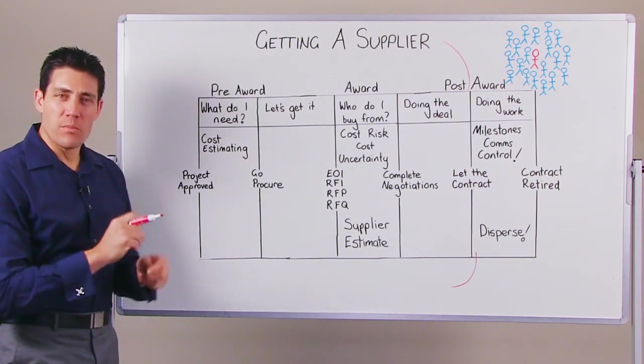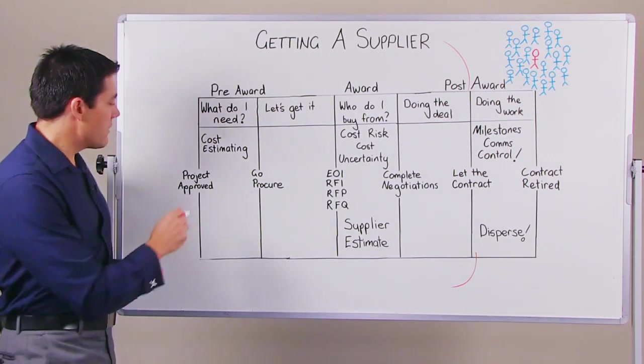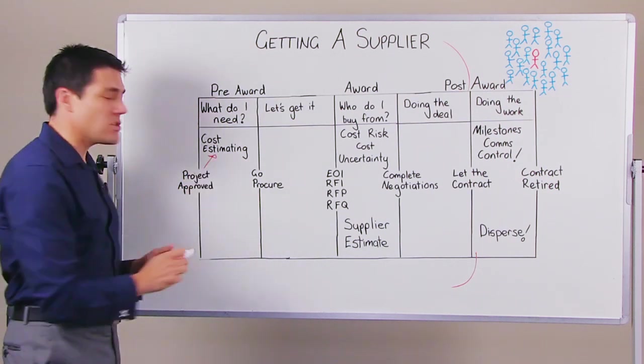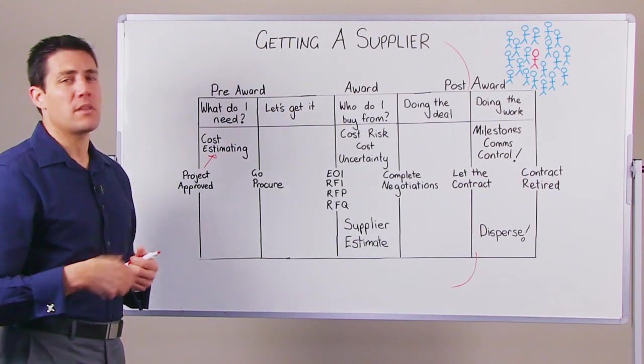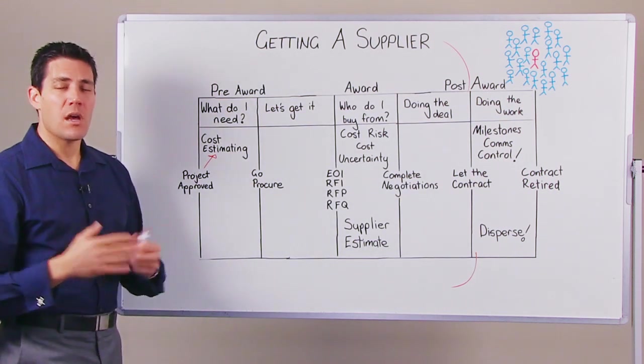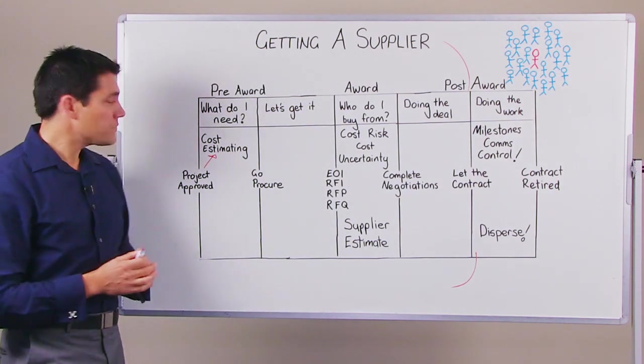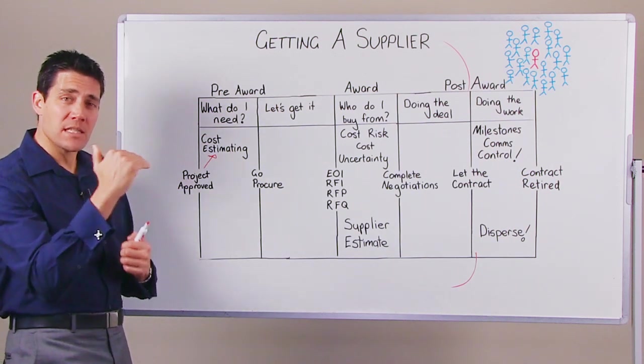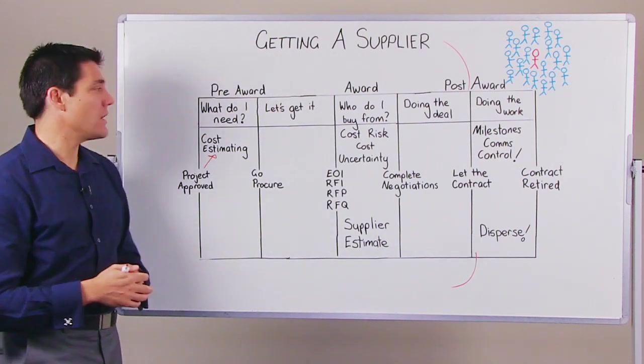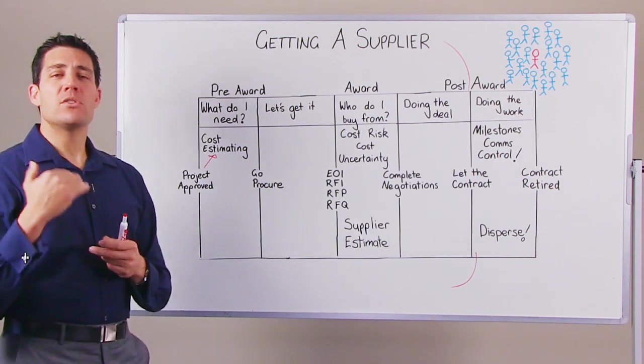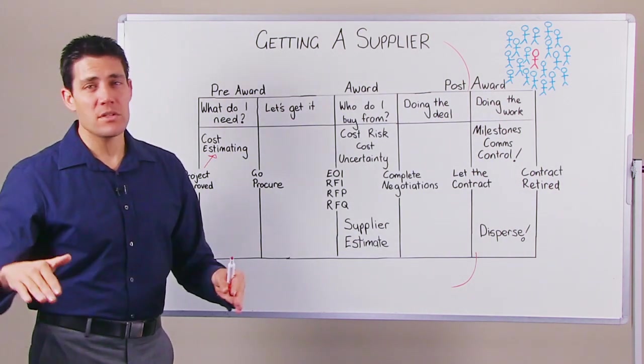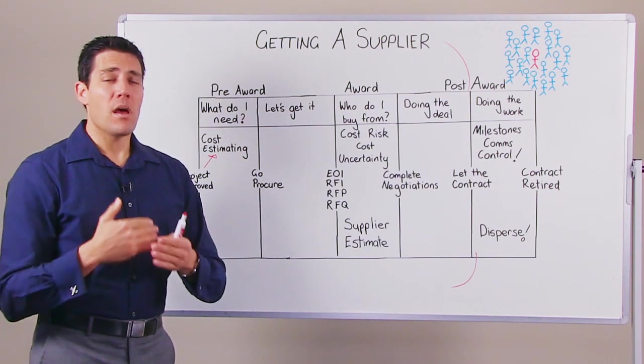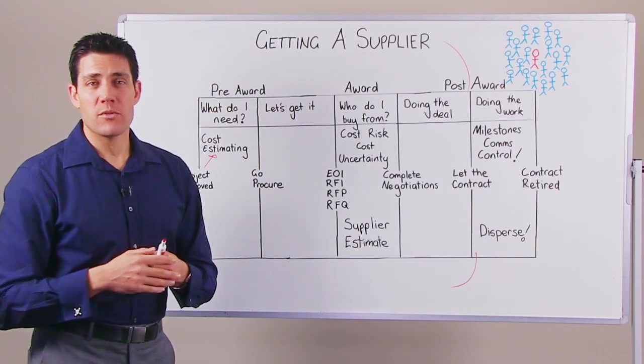Once you determine and you go to your board and get your project approved, the first thing they're going to want you to do is make sure you do an internal cost estimate. Do your own homework to figure out what you think the actual project is going to cost to produce those deliverables. Once you get that cost estimate together, go out and procure it. That means look through the history of commercial terms that you have with your current suppliers, figure out which one can actually do the work for you, give them a call.